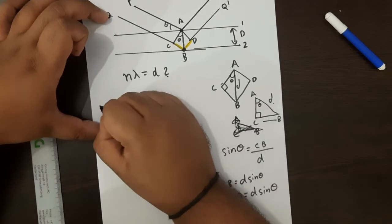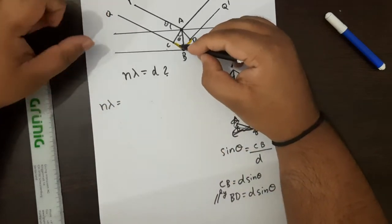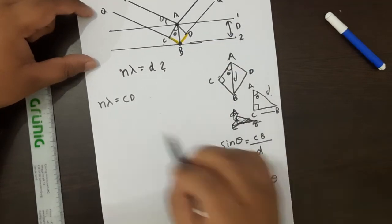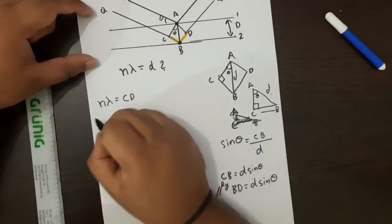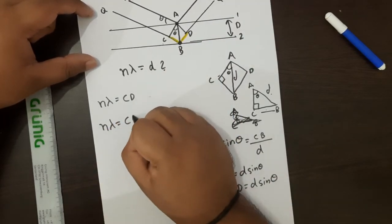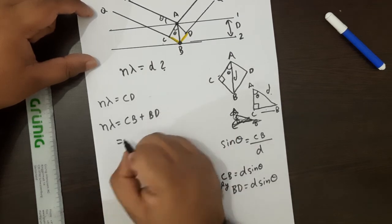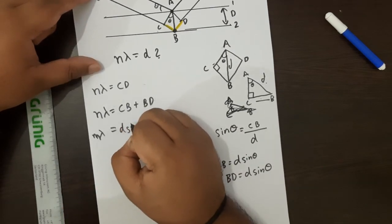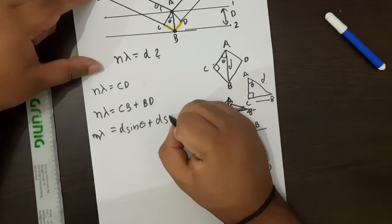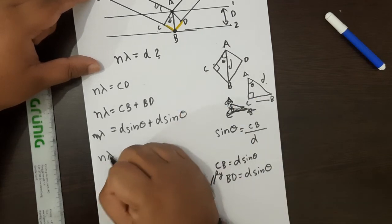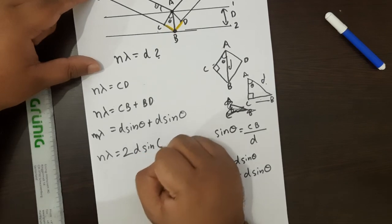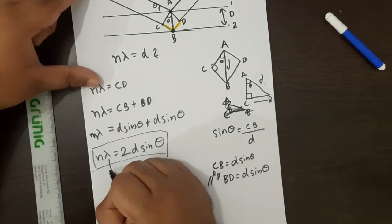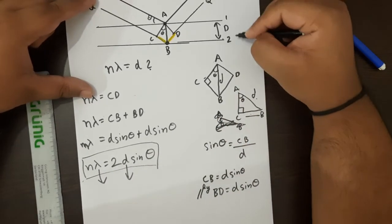Going back to our equation: N·lambda must equal the total extra path length, which is CB plus BD. Therefore, N·lambda equals D·sine(theta) plus D·sine(theta). So N·lambda equals 2D·sine(theta). This is Bragg's equation, which relates the wavelength of light with D, the inter-lattice distance. This was a major breakthrough because understanding these conditions enabled the development of various analytical techniques.